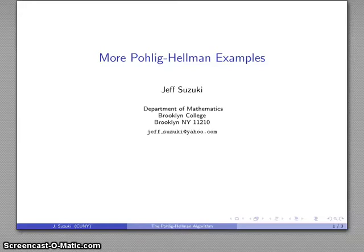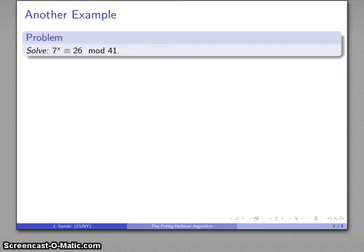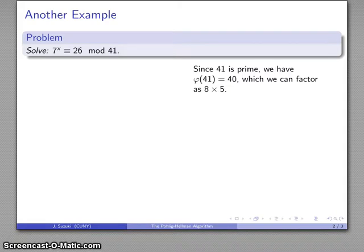Let's take a look at another Pohlig-Hellman example. I want to solve the discrete logarithm problem 7 to power x congruent 26 mod 41. 41 happens to be prime, so I can factor it as 8 times 5.